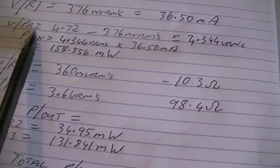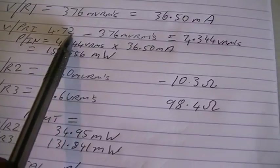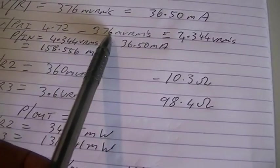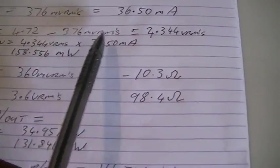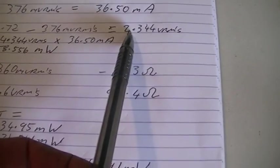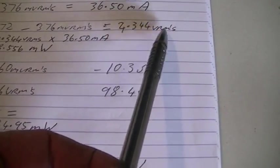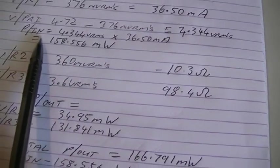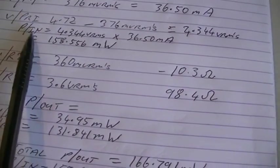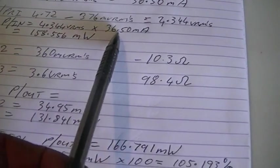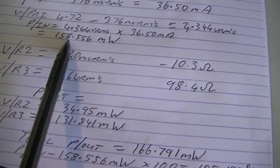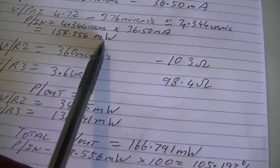The voltage across our primary is 4.72 volts minus the voltage drop across R1, which is 376 millivolts. That gave us a voltage of 4.344 volts RMS across our primary coil. So our power in is 4.344 volts RMS times 36.5 milliamps. That gives us 158.556 milliwatts.